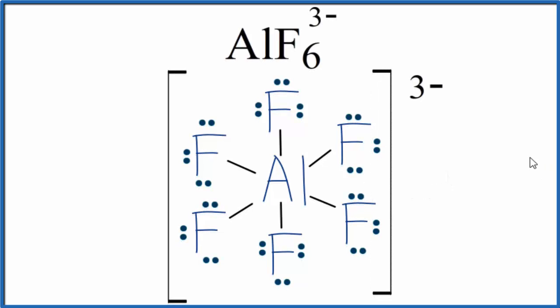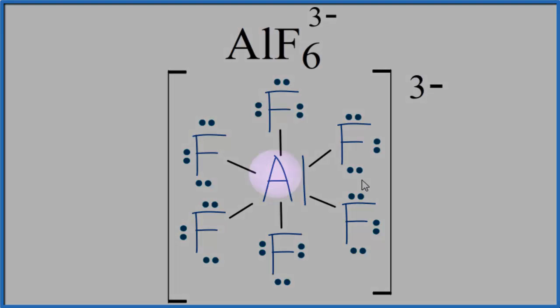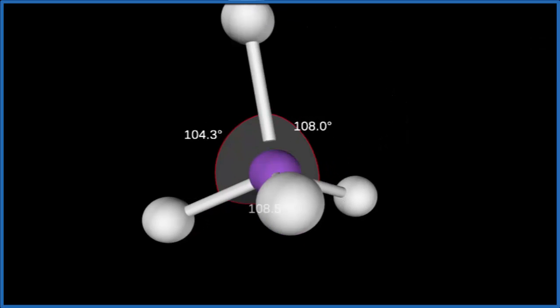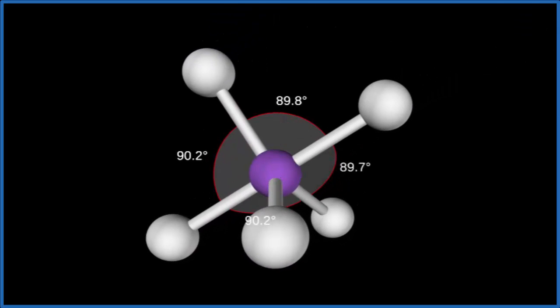Let's take a look at the molecular geometry and the bond angles for a moment. Note we have six fluorine atoms and no lone pairs. So we add our six fluorine atoms, and they're going to spread out to be as far away as they can from each other.